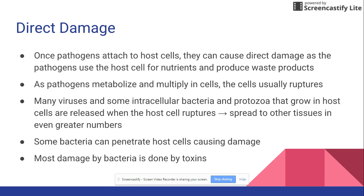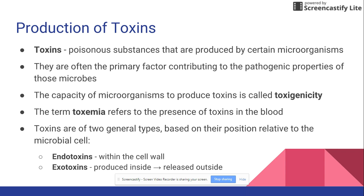Most of the time, the damage caused by bacteria is going to be caused by toxins. Toxins are some sort of poisonous substance produced by a microorganism. They are often the primary factor contributing to the pathogenic properties of microbes — this is what is most often used by microbes to overwhelm the host cell's defense. The ability of a microorganism to produce toxins is called toxigenicity, and whenever toxins are found within the blood it's called toxemia.